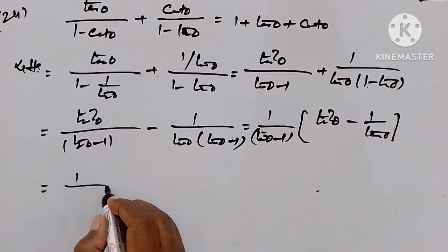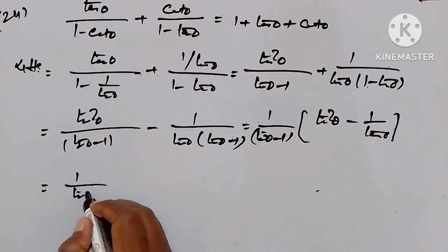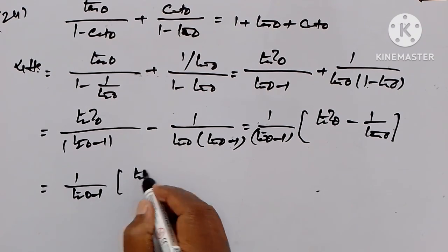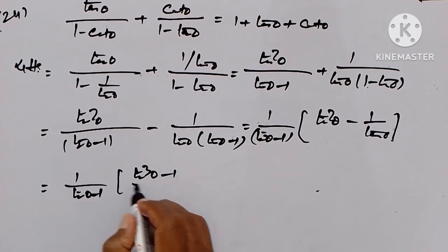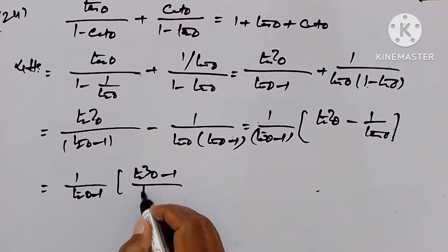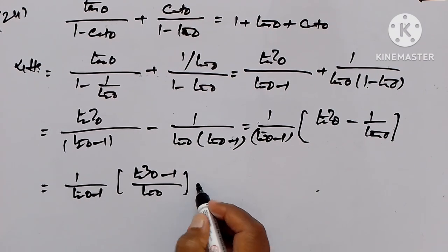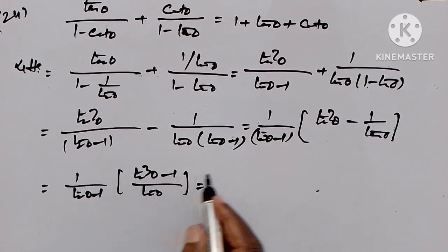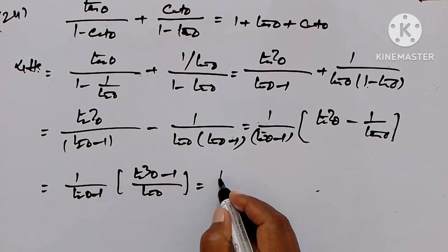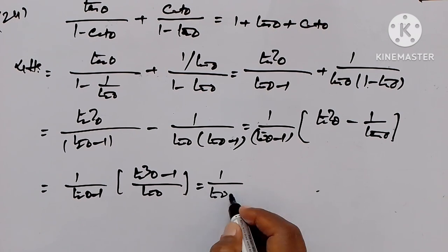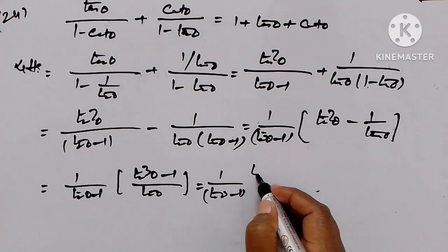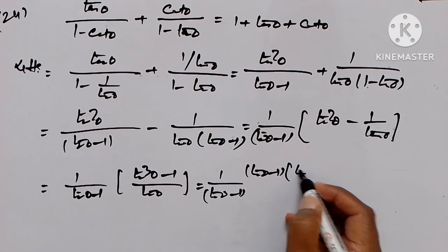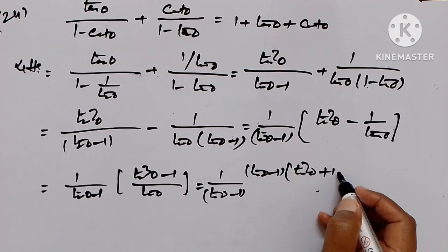Solving further, we get 1 upon (tan θ - 1) and this becomes (tan θ - 1) whole upon tan θ. This can be further simplified: 1 upon (tan θ - 1) into (tan θ - 1), plus 1, plus tan θ.